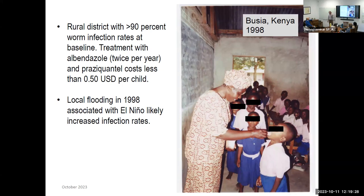At baseline in January 1998, over 90 percent — specifically 93 percent — of kids in these Kenyan primary schools had at least one worm infection. Most had multiple infections, and many had what the WHO would consider moderate to heavy infections based on stool sample analysis. Those are infections that could lead to significant nutritional consequences.